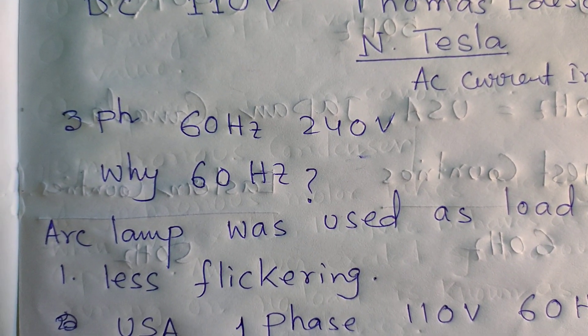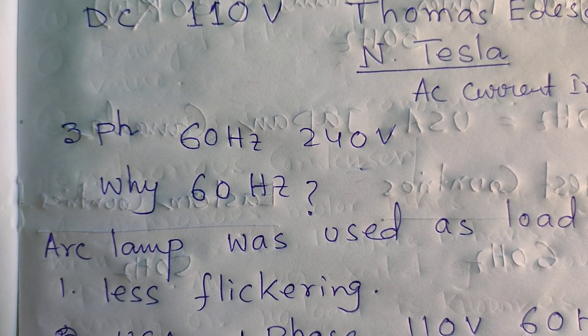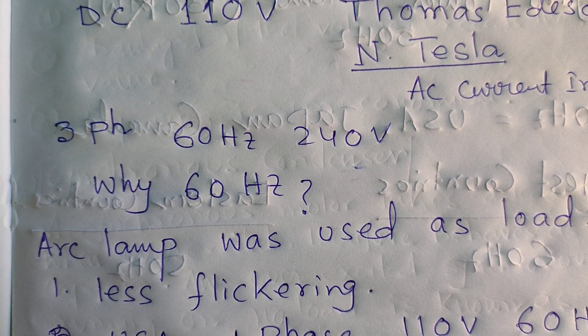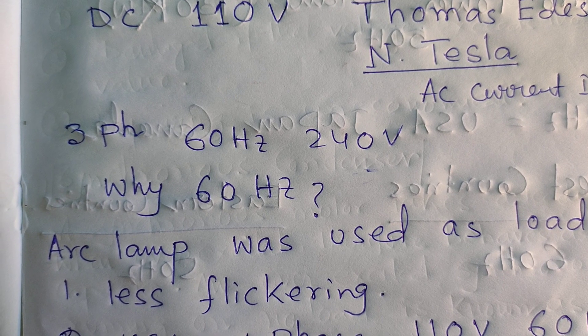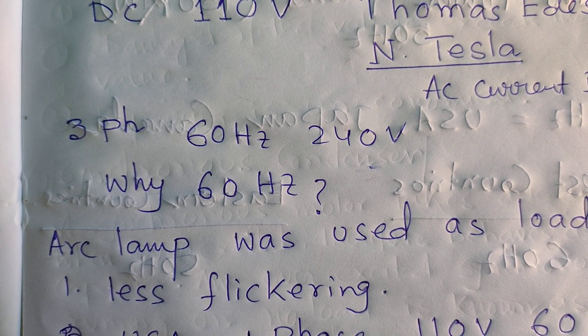Why 60 Hertz? Because the arc lamp was used as the load, and Nikola Tesla saw less flickering in the 60 Hertz system.